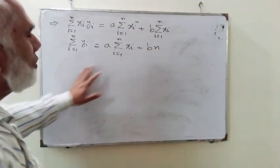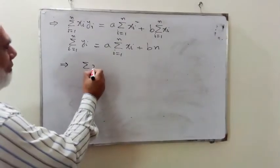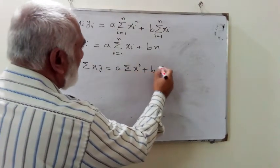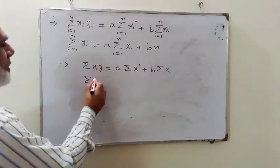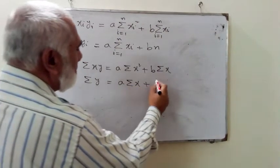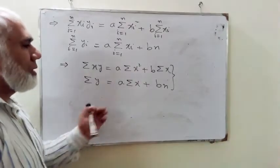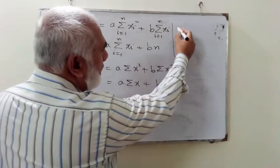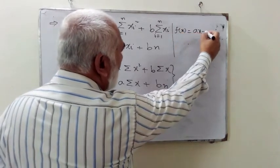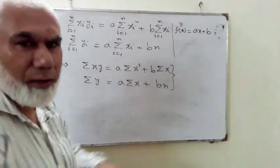Without any loss of generality, ignoring the index notation, these two equations take the simple form: sigma(xy) = a*sigma(x²) + b*sigma(x), and sigma(y) = a*sigma(x) + b*n. These are the normal equations we were looking for, corresponding to the straight line curve y = ax + b from which we started.